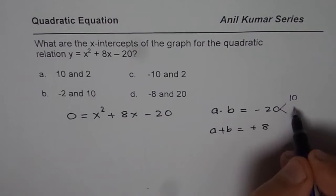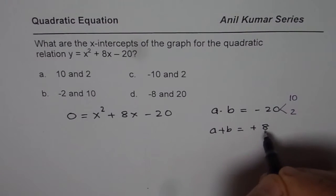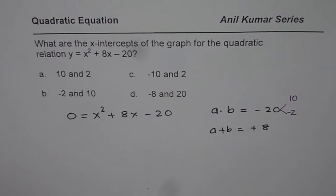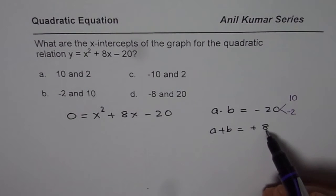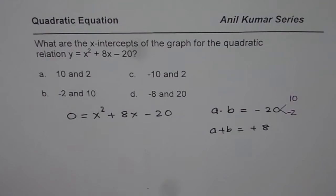We get a combination which is 10 times 2 gives us 20. When you add, we need +8. So we have 10 and -2. Now you see, when you multiply them, you get a negative number. And when you add them, you get a positive number.